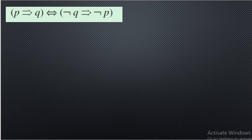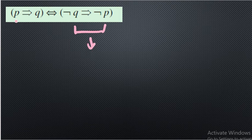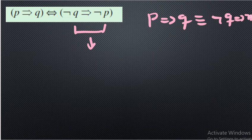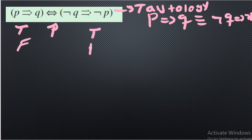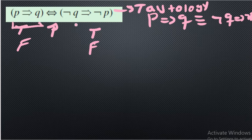The second one says (p implies q) biconditional (negation q implies negation p). Notice that negation q implies negation p is the contrapositive of p implies q. So the two sides are the same. Again, left wing and right wing are the same for the biconditional, so this is also a tautology. When left and right sides are the same, the biconditional is always true, so the conclusion is tautology.